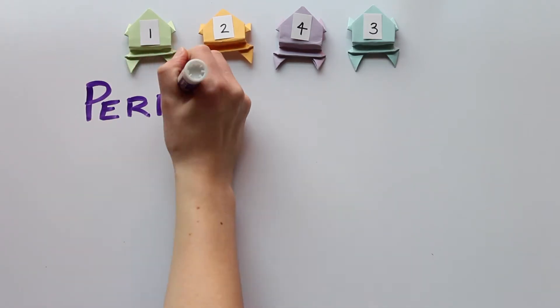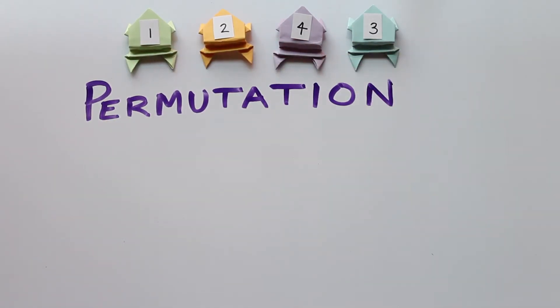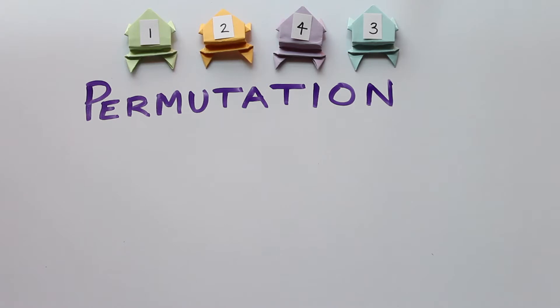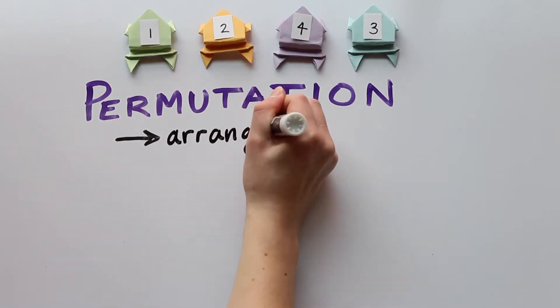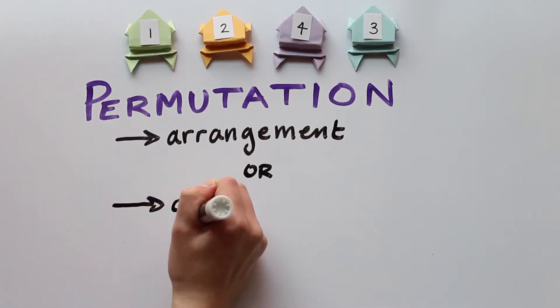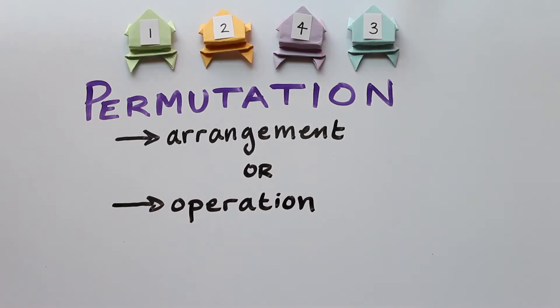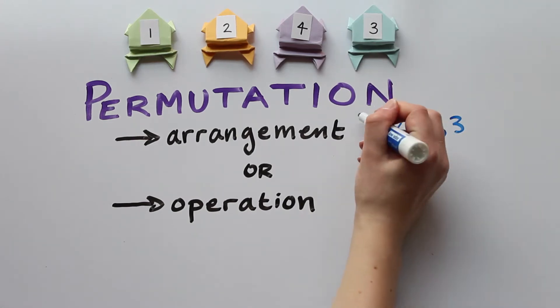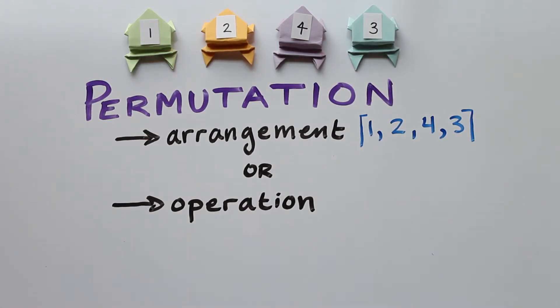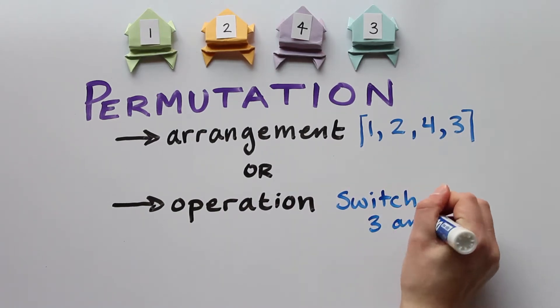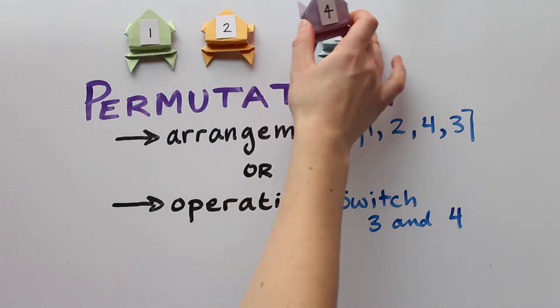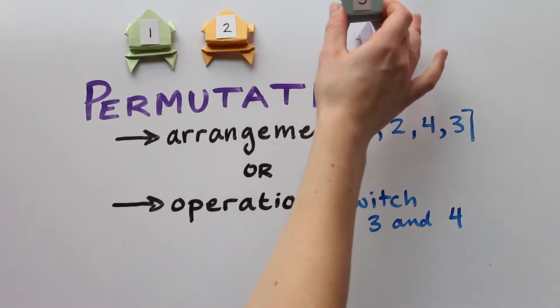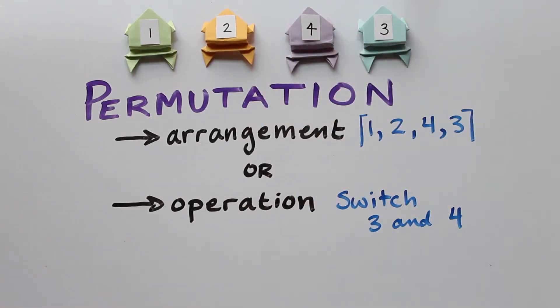We call each of these orderings a permutation of the frogs. The word permutation refers both to the arrangement of the frogs and the operation that puts them in that arrangement. For instance, this permutation can refer to the order 1, 2, 4, 3, or the operation switch frog 3 and frog 4. We will go back and forth between these two definitions, and it's helpful to keep both in mind.